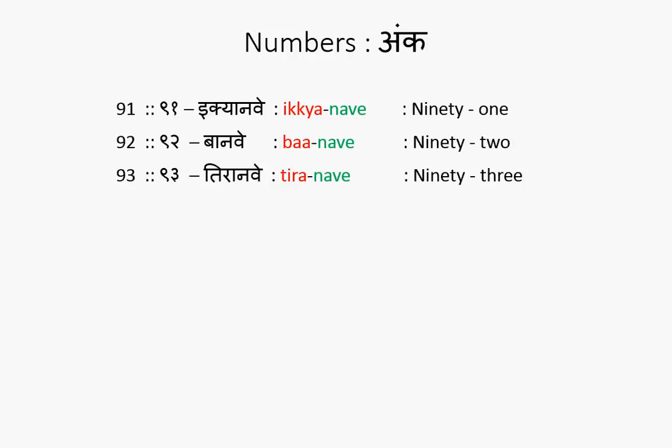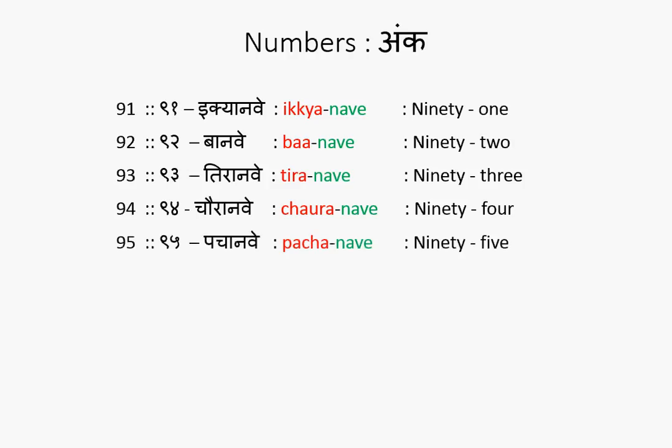Chaoranve. Chaar is 4 — Chao stands for a conjugated 4. Chaoranve is 94. Then Pachanve — Paanch is 5, so Pachanve is 95. Chaay is 6, and 96 is Chiyanve. Ikyaanve, Baanve, Tiraanve, Chaoranve, Pachanve, Chiyanve.